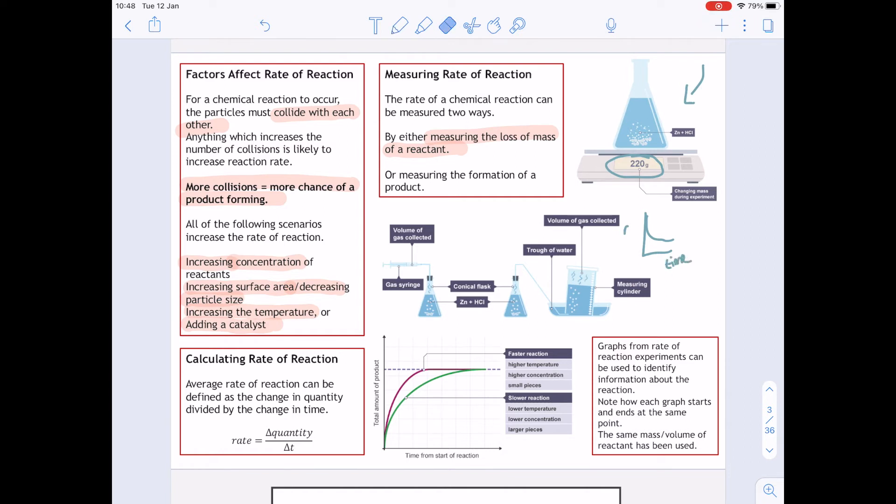You can also measure it by having a look at the formation of a product. That is the one at the bottom. So you can collect gas in two different ways: you can use a gas syringe and you can also use it kind of over water, which is this one here with the trough of water. Now your graphs are going to look like the one at the bottom here, because you've got a formation so you're starting with none and you're increasing it until you get a higher volume of it.